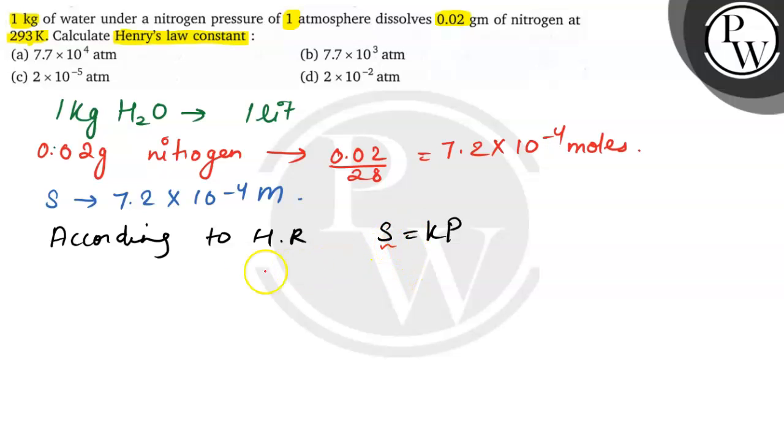Here we can substitute the values. We get 7.2 × 10^-4 equals K times pressure, which equals 1 atmosphere. So K equals 7.2 × 10^-4 atmosphere.